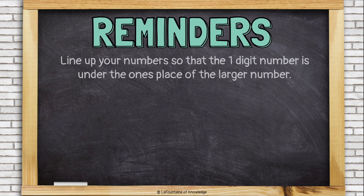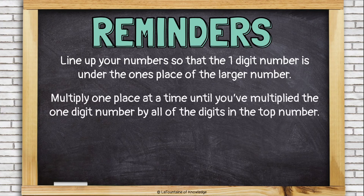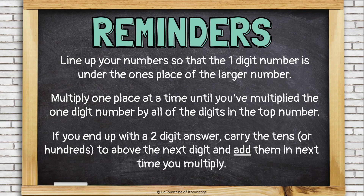Let's review. Line up your numbers so that the one-digit number is under the ones place of the larger number. Multiply one place at a time until you've multiplied the one-digit number by all of the digits in the top number. If you end up with a two-digit answer, carry the tens or the hundreds to above the next digit and then add them in the next time you multiply. So you multiply and then you add that number that you carried before you write it down as part of your answer.